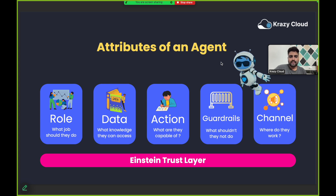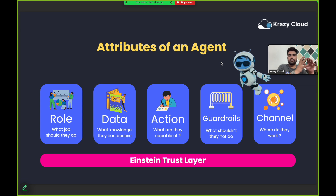There are five attributes of an agent. The first one is role. Role defines the job of your AI agent — just like we all have roles defined in our current jobs. For example, if you are a Salesforce developer, your role is to work on Salesforce-related tasks. The same way, we define the role — the job — of an agent when creating custom agents.